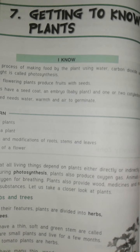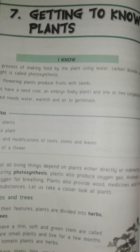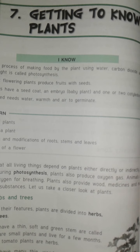Some plants are very small. They have soft, weak, and thin green stems and they live for a short time — these types of plants live for a few months. They are called herbs. We get vegetables and fruit from these types of plants. For example: coriander plant, tomato plant, mint plant, etc.